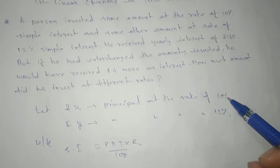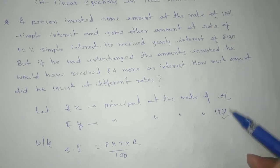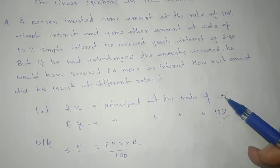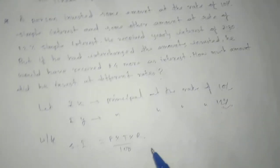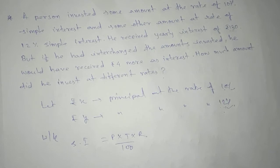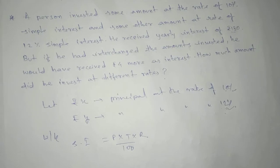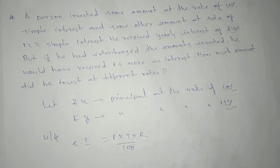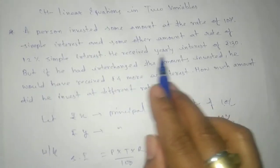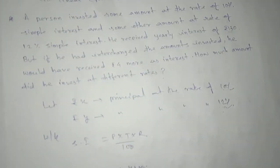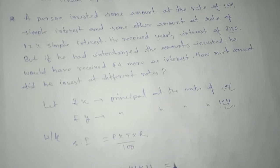One will be 10%, another is 12%, and both after adding the simple interest of this rate and that rate will get 130. That means x × 1 × 10/100 plus y × 1 × 12/100 equals to 120. This is your first equation.